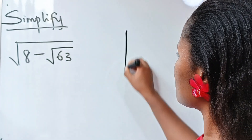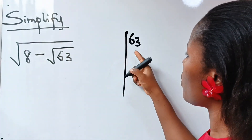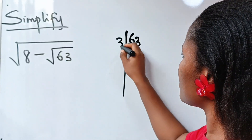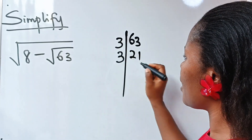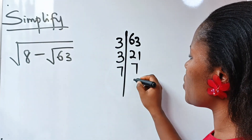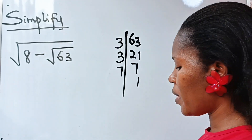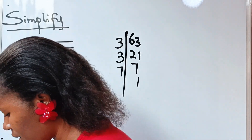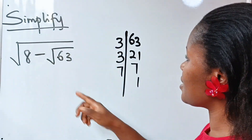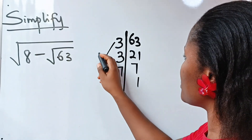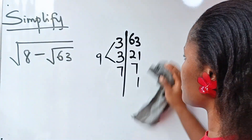Let us simplify root 63. Because 63 can be divided by 3, when 3 divides 63 we have 21. Divide by 3 again and we have 7. So in a simplified way, we can write root 63 as 3 times 3, which is 9, times 7. So that is how we are going to represent 63 now.